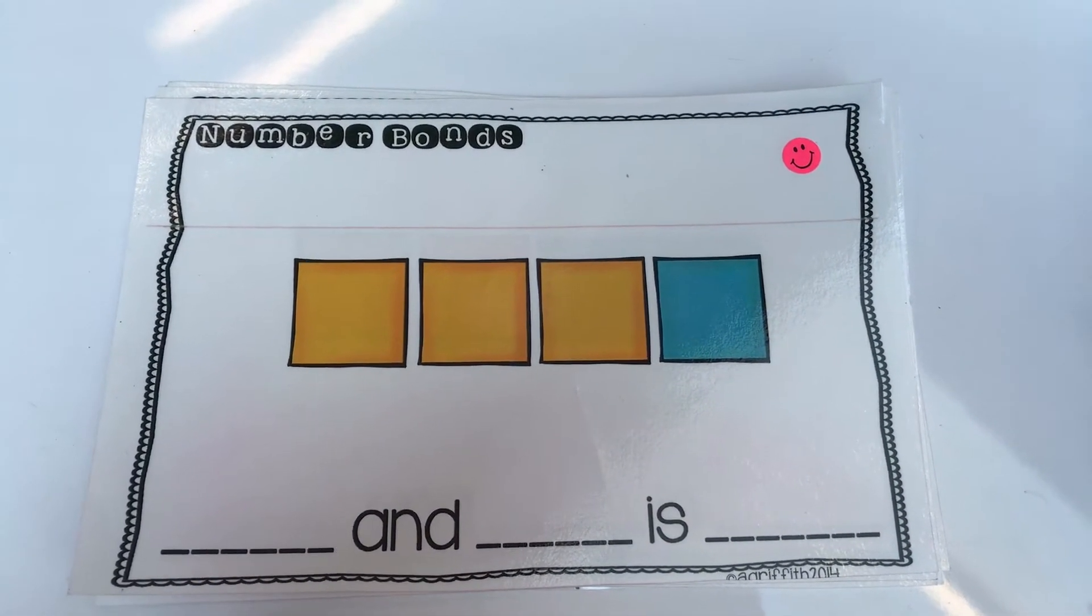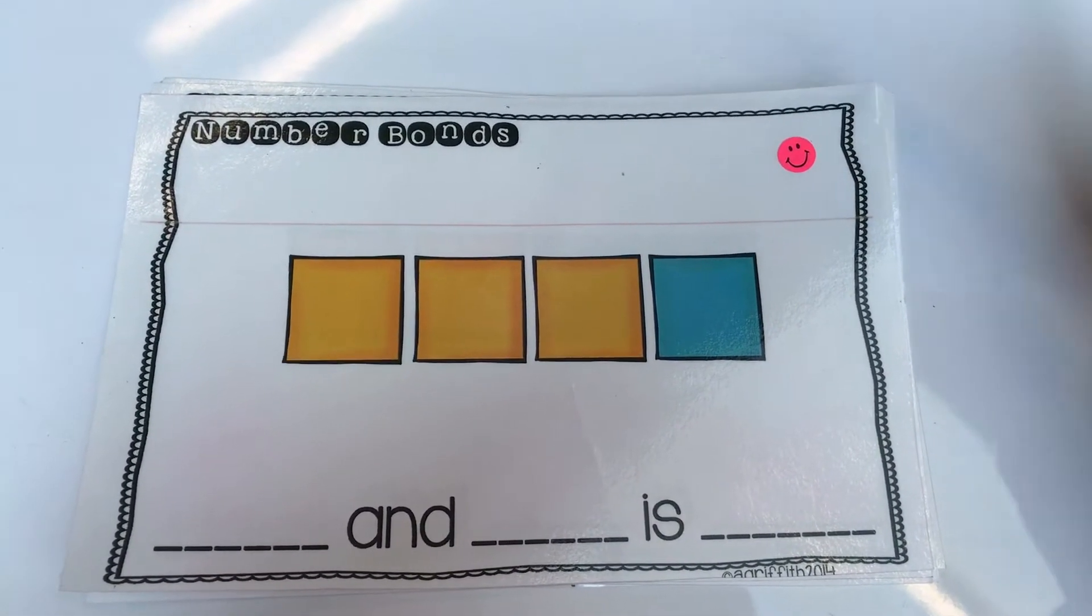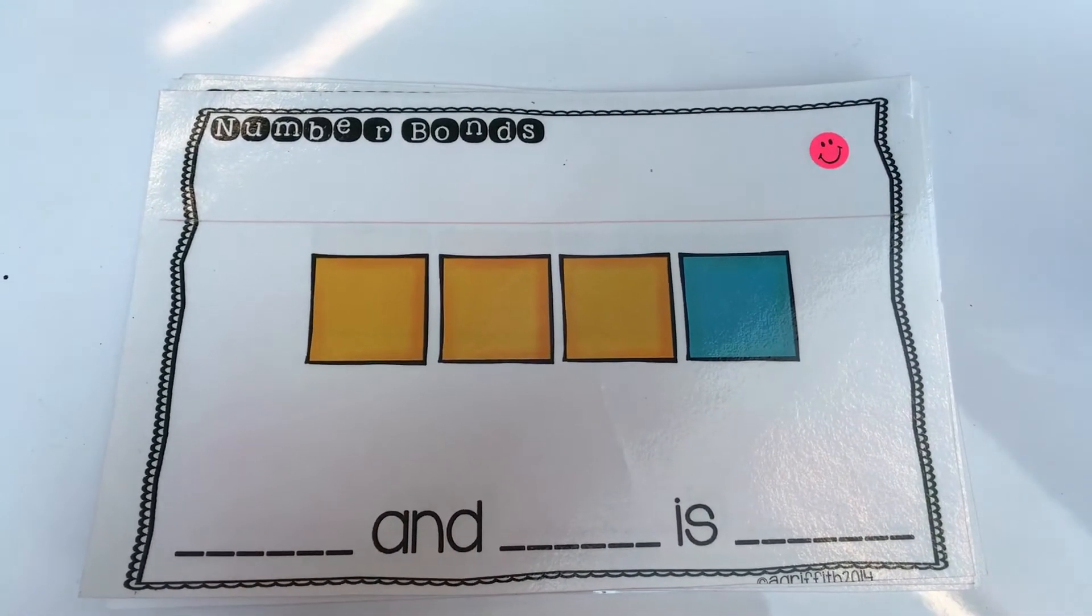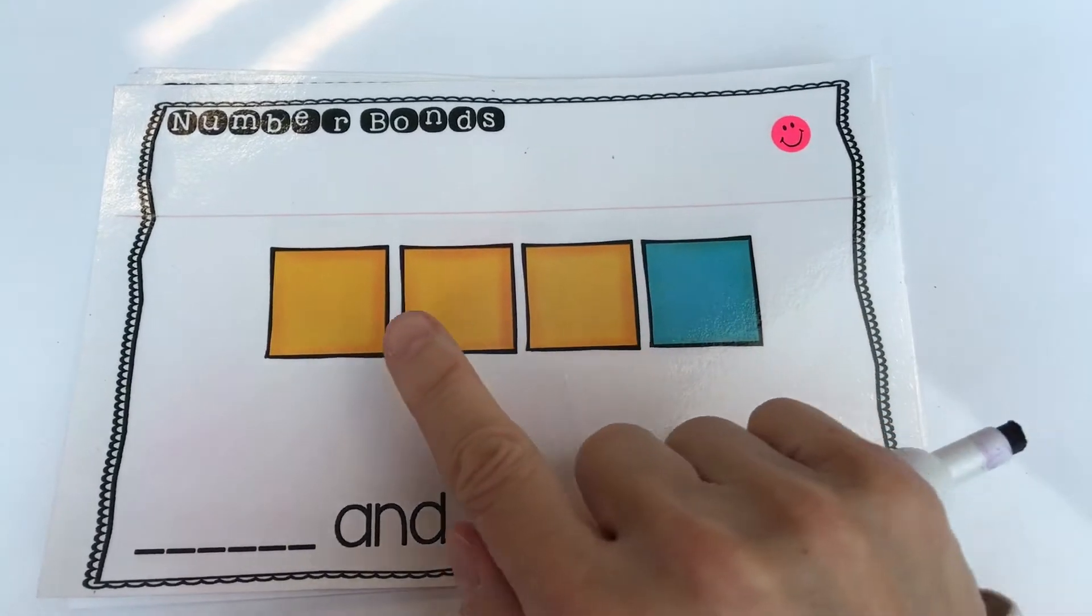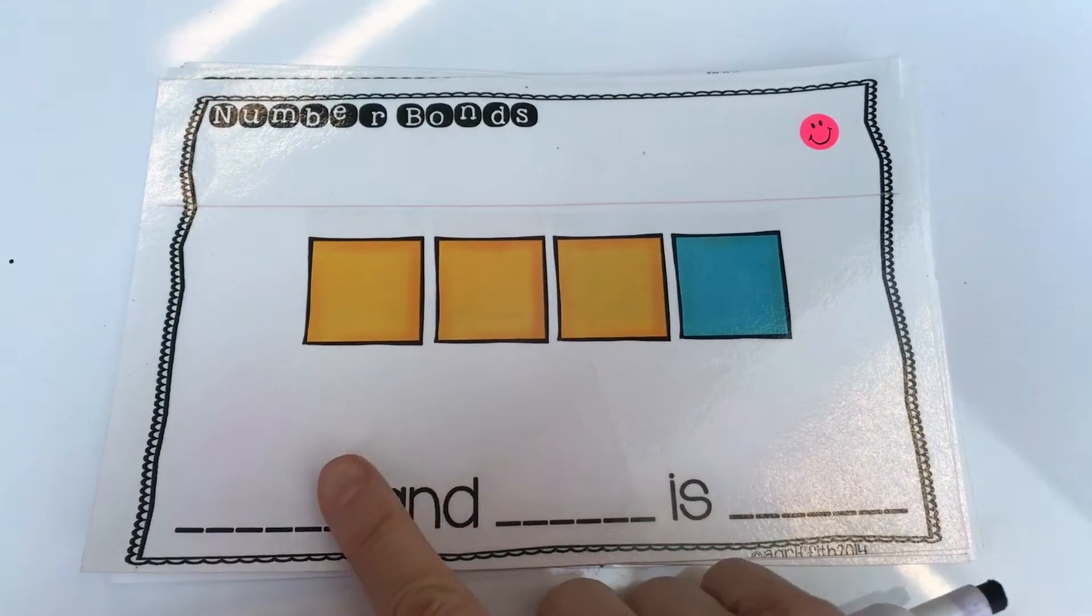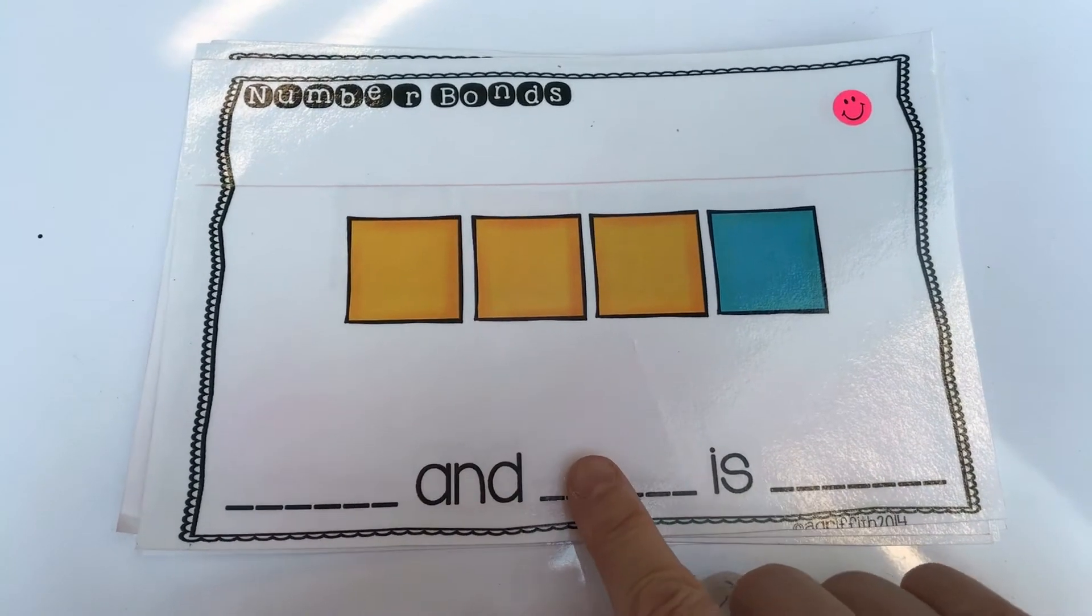Hi boys and girls, for this number bond activity you will need these cards and a dry erase marker. What you're going to be doing is first counting the yellow and then counting the blue. And you're going to be writing the numbers down in these empty spaces.